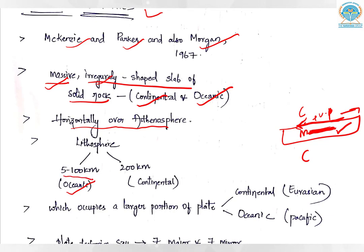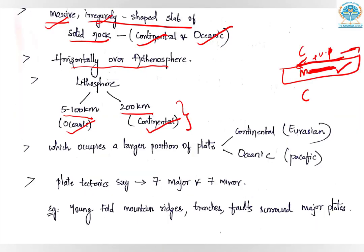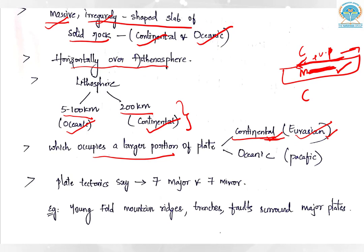If it is an oceanic plate, its thickness will be 5 to 100 kilometers; if it is a continental plate, it is 200 kilometers — so continental plates are thicker. When do we call a plate continental or oceanic? Whichever composition occupies the larger portion is how it is named. For example, the Eurasian landmass is a continental plate because its landmass is more than the surrounding ocean. The Pacific plate is oceanic because its oceanic area is greater than its continental portion.